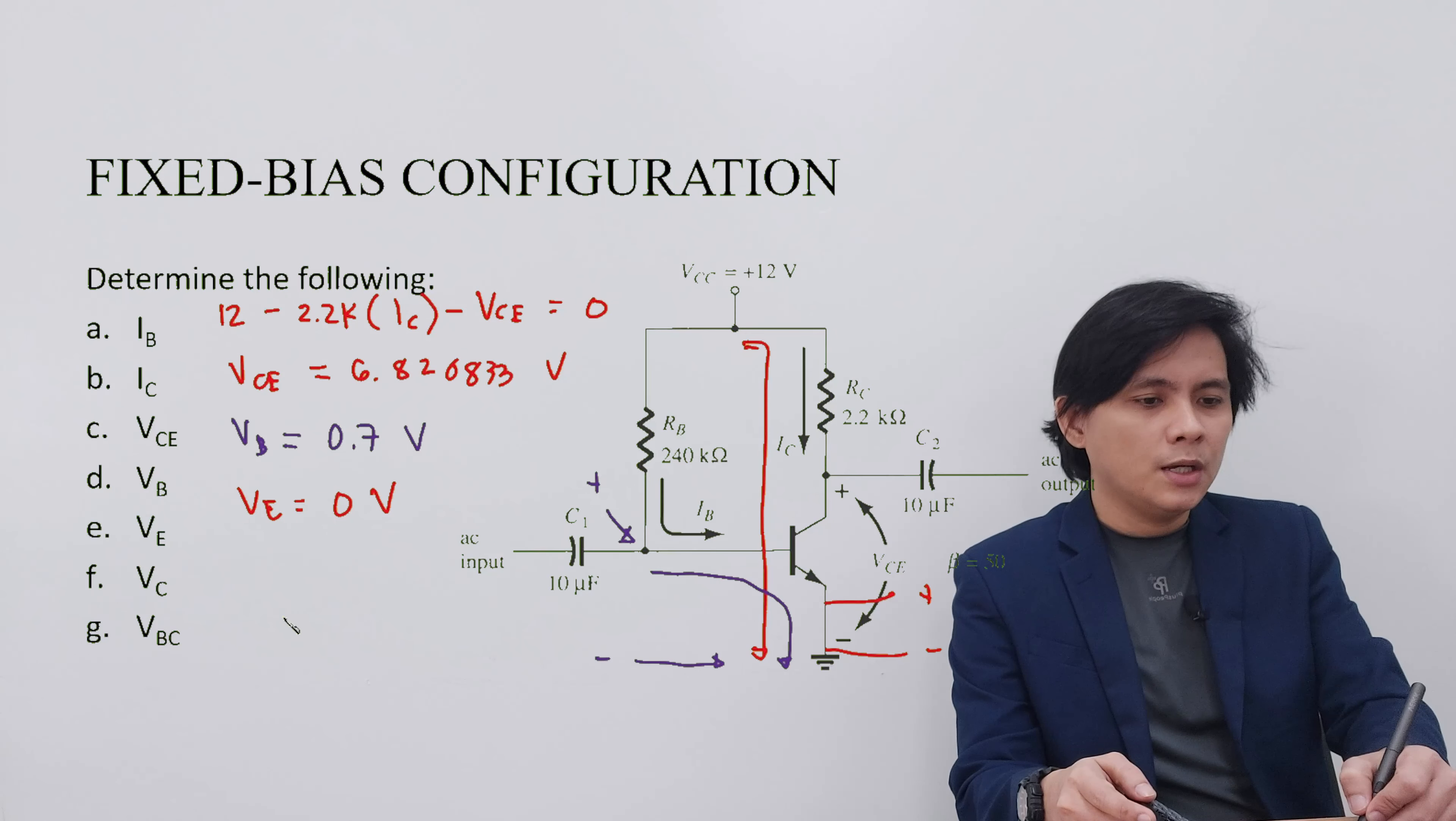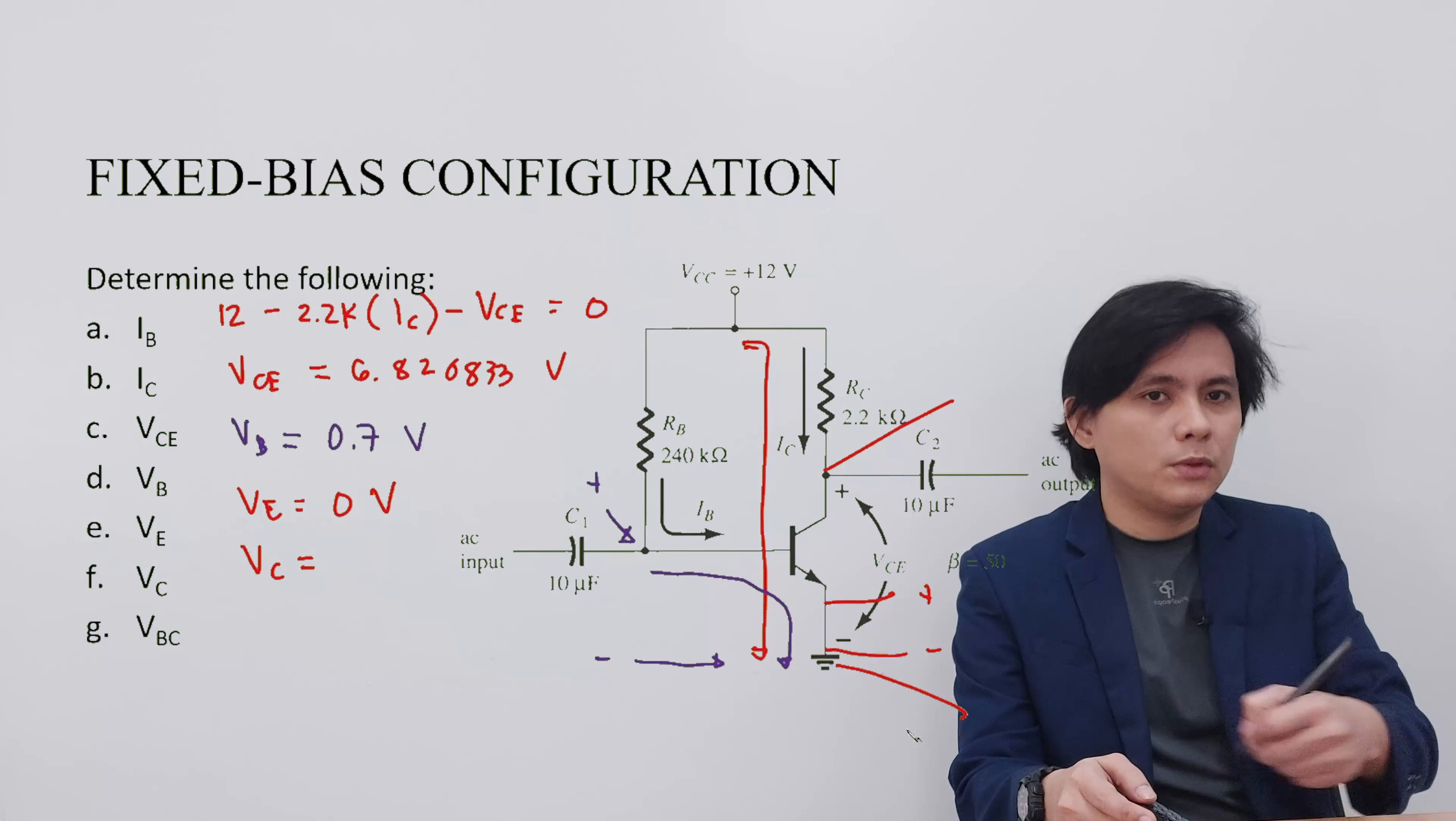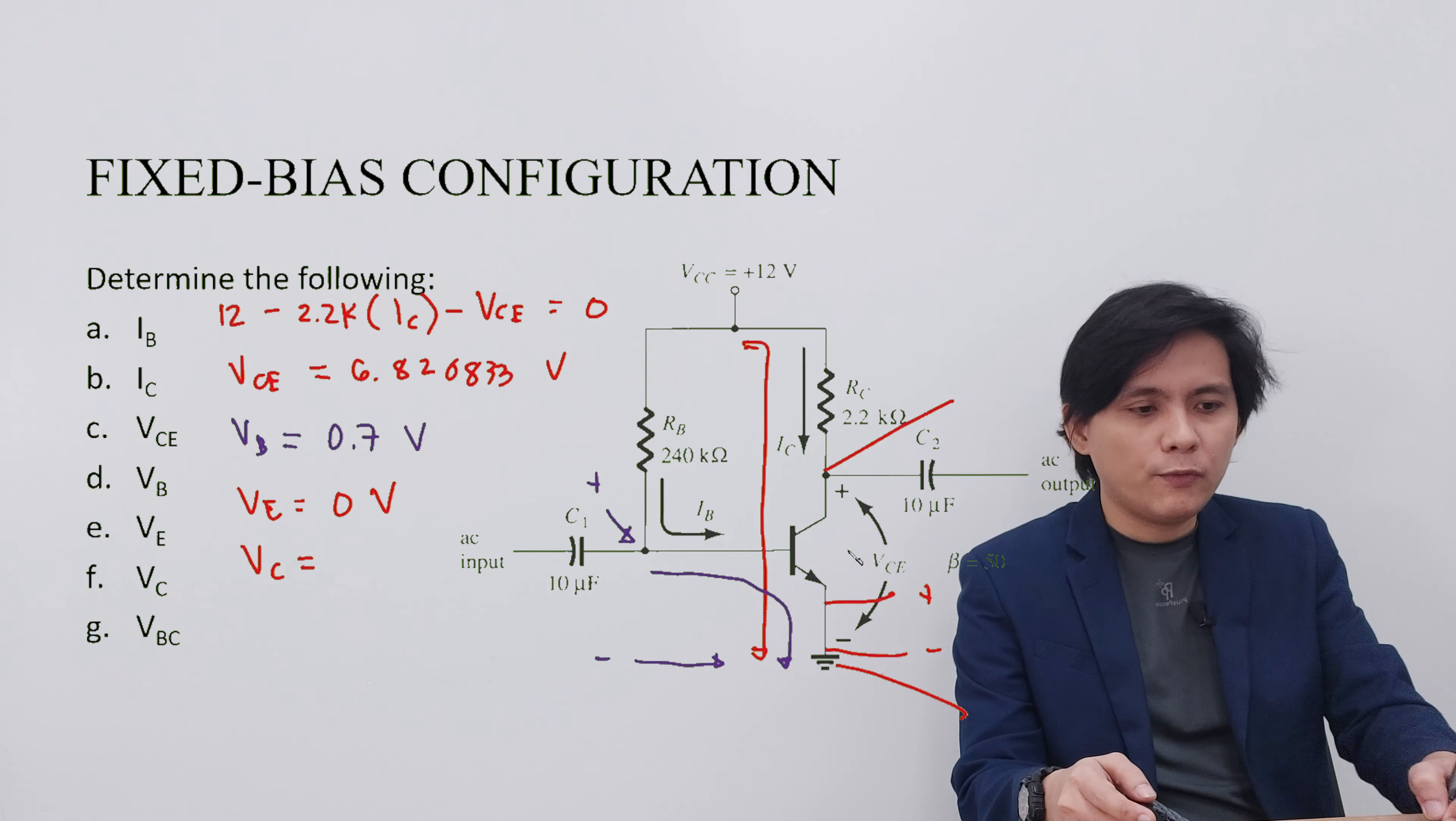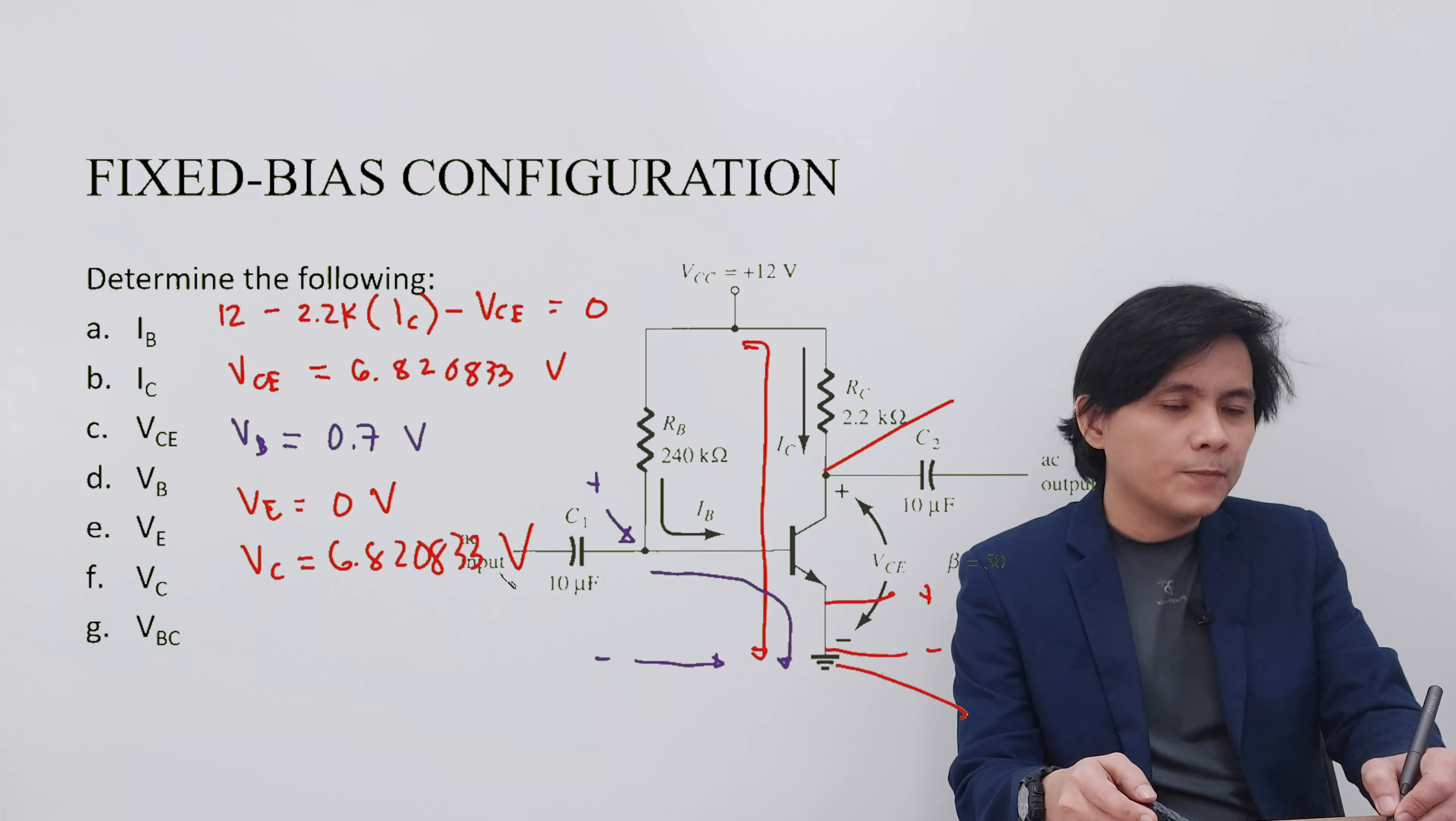Therefore, VE is 0 volts. In addition, VC is measured from the collector down to the ground. Similar to the VB, we can only measure the voltage drop across the CE junction. Therefore, our VC is equivalent to VCE, which is equivalent to 6.820833 volts.